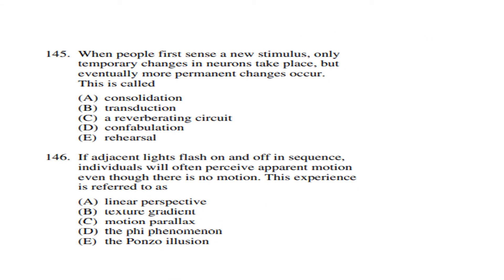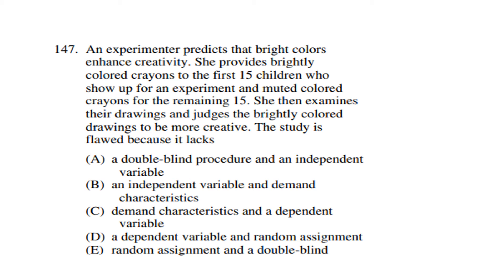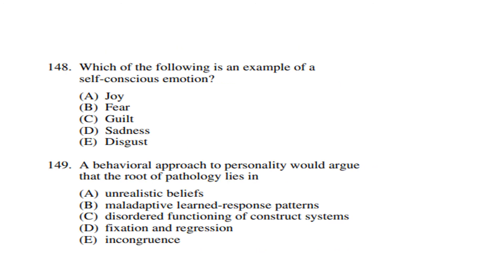Question 145: When people first sense a new stimulus, only temporary changes in neurons take place, but eventually more permanent changes occur — this is called consolidation. Question 146: If adjacent lights flash on and off in sequence, individuals will often perceive apparent motion even though there is no motion. This experience is referred to as the phi phenomenon. Question 147: An experimenter predicts that bright colors enhance creativity. She provides brightly colored crayons to the first 15 children and muted colors to the remaining 15, then judges the brightly colored drawings to be more creative. This study is flawed because it lacks random assignment and a double-blind technique.